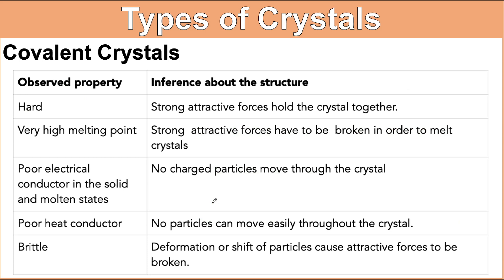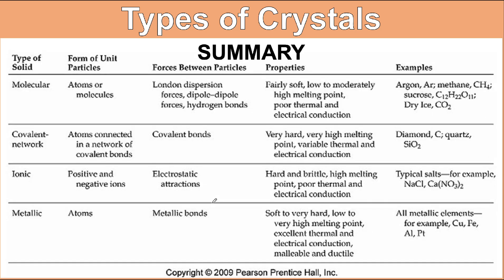This table summarizes the properties of covalent crystals and the inferences about the structure. And this final table shows the summary of everything we've discussed — including the type of solid, the form of unit particles, the forces between particles, properties, and some examples.